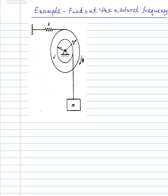In this problem we have to find out the natural frequency of this system, where this is a stepped cylinder or a stepped disc. This is the step, and the axis of rotation passes through this point. A mass is suspended from here at radius r1, and at radius r2 the disc is supported by a spring.